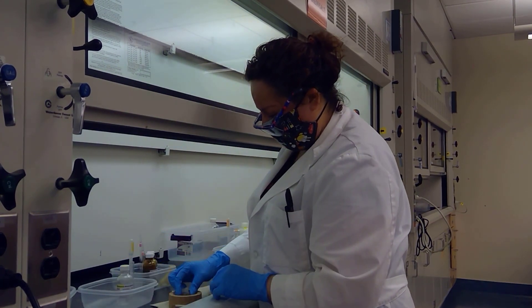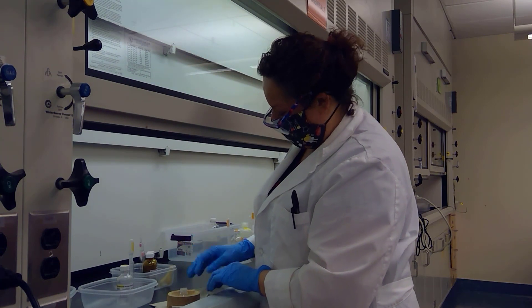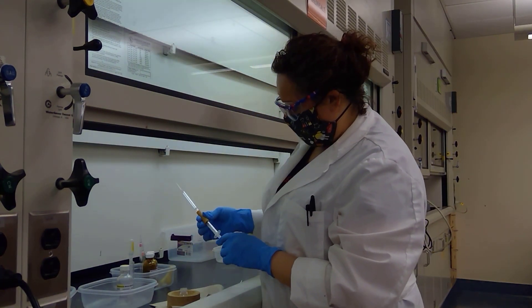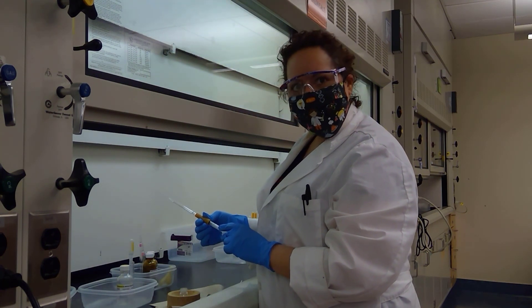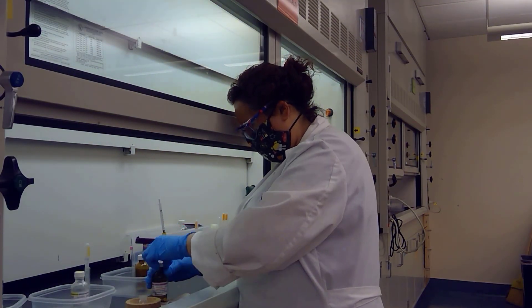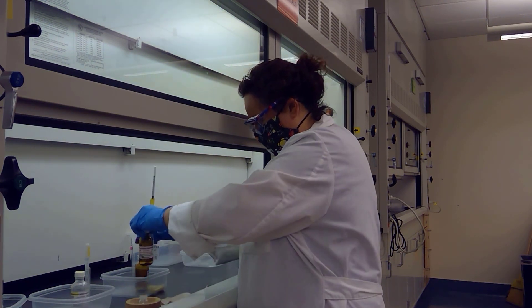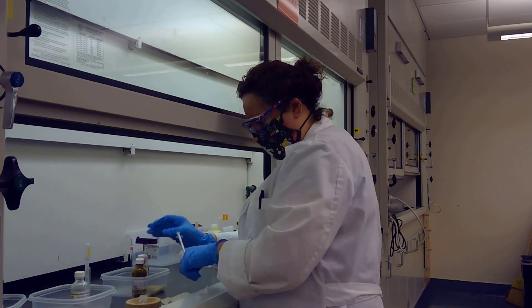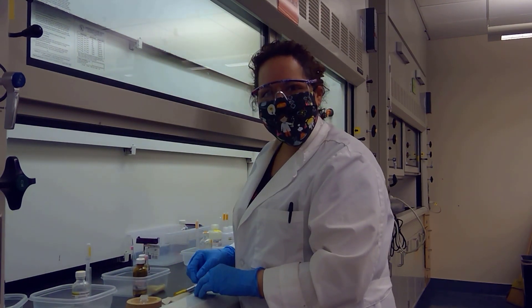The next liquid to add would be the ethyl iodide, and for that I'm going to grab a syringe. For this one here we're going to be adding 0.28 milliliters, and now our apparatus is ready for reflux.